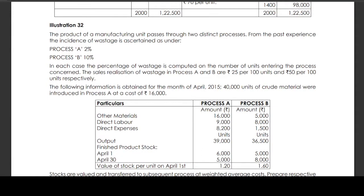Illustration 32. The product of a manufacturing unit passes through two distinct processes. From past experience, the incidence of wastage is assigned as: Process A 2%, Process B 10%. In each case, the percentage of wastage is computed on the number of units entering the process concerned. The sales realization of wastage in Process A and B are 25 rupees per 100 units and 50 rupees per 100 units respectively.